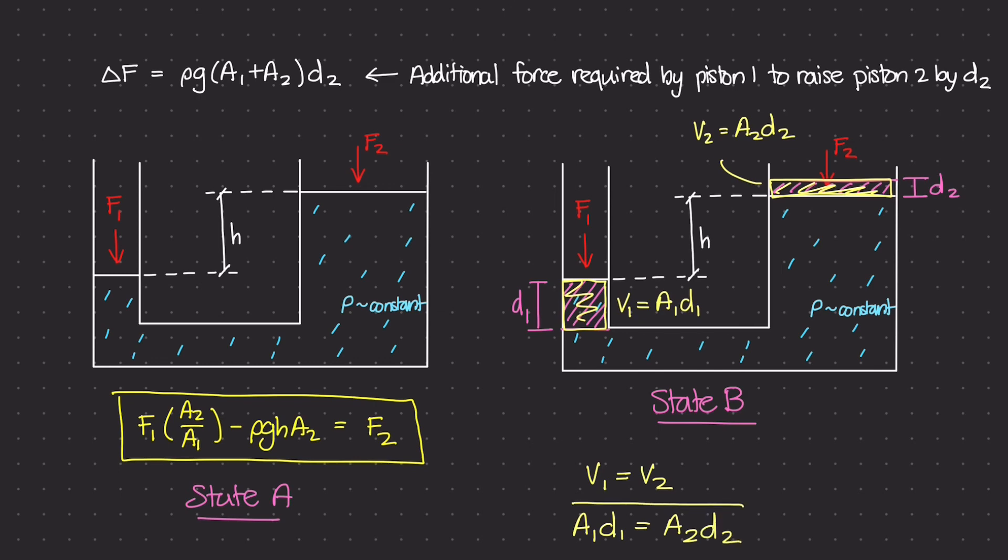Now, this is going to be a really important equation along with this equation here from state A. And we're going to use both of these equations to figure out what this additional force is to be able to move piston 2 up by an amount of D2. So, I will see you guys in the next video.